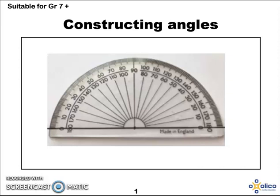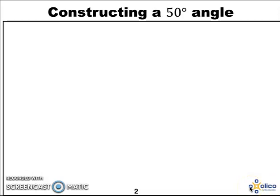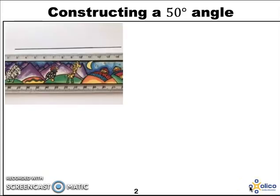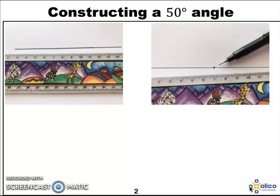So let's begin by constructing a 50 degree angle. We start an angle construction by drawing a straight line with our ruler and then by putting a point somewhere on that straight line. Make sure your straight line is long enough for your protractor to work across that line.